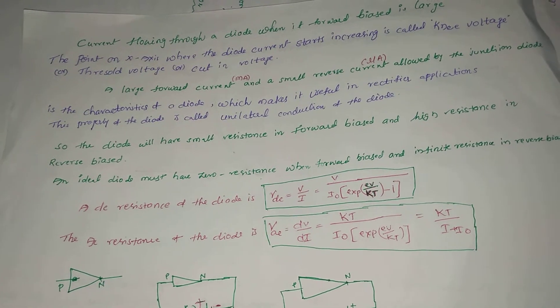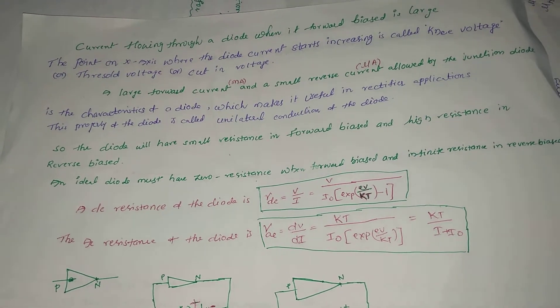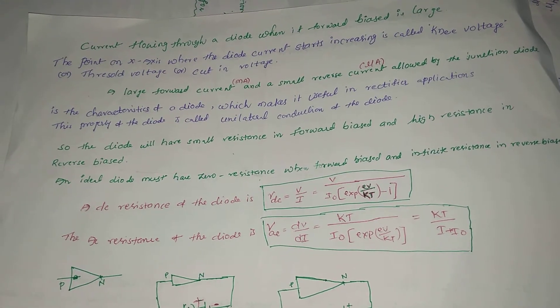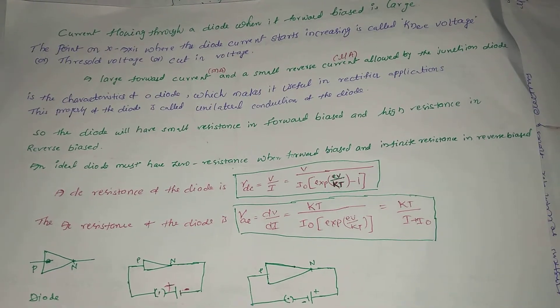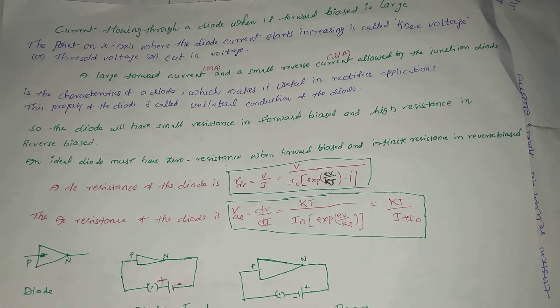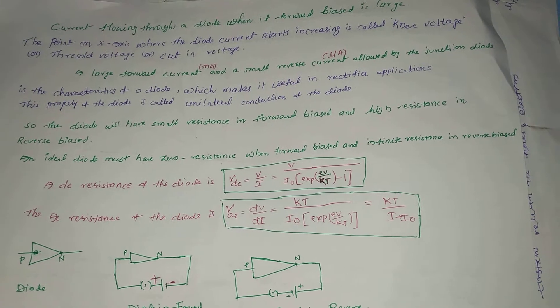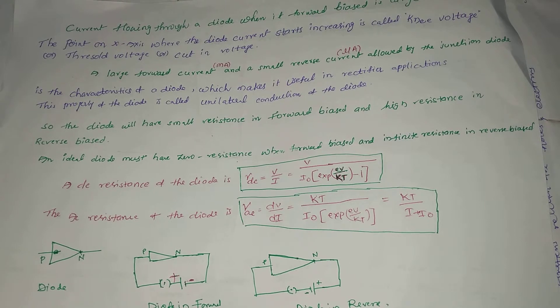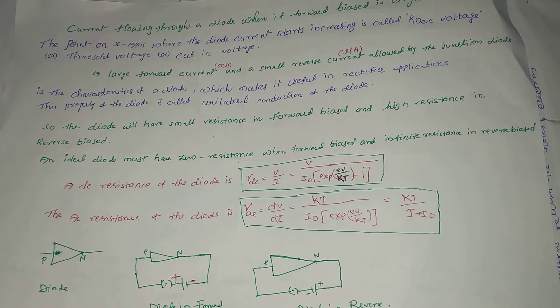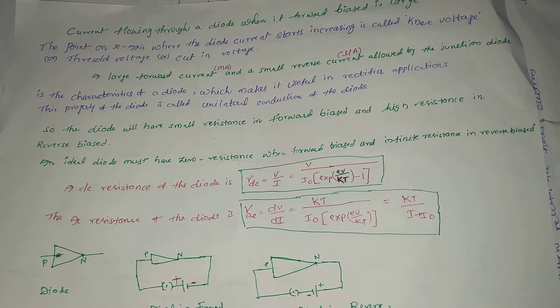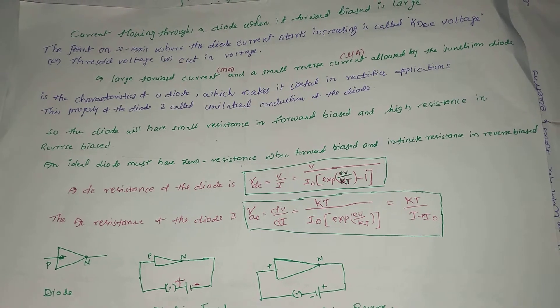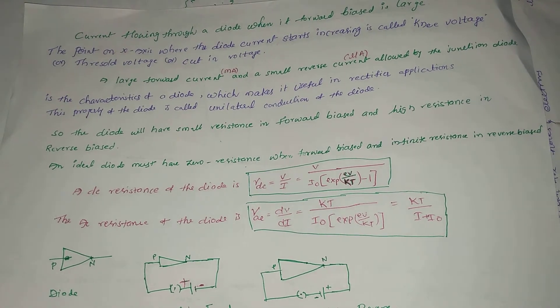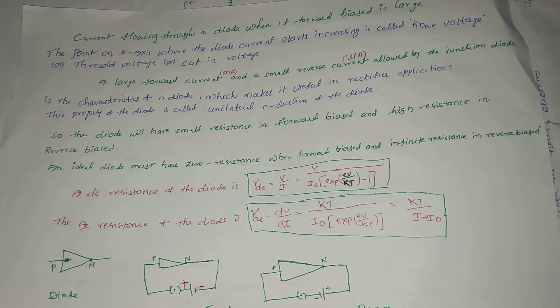An ideal diode must have zero resistance when it is in forward bias and infinite resistance in reverse bias. Therefore, the DC resistance of the diode is R_DC = V/I = V/(I_0 * exp(AV/KT) - 1).